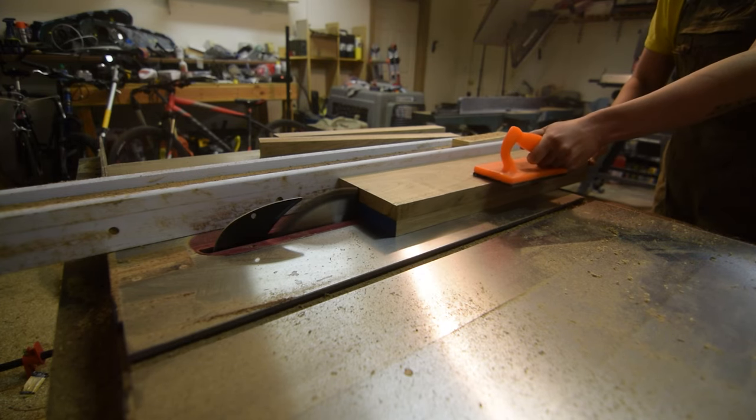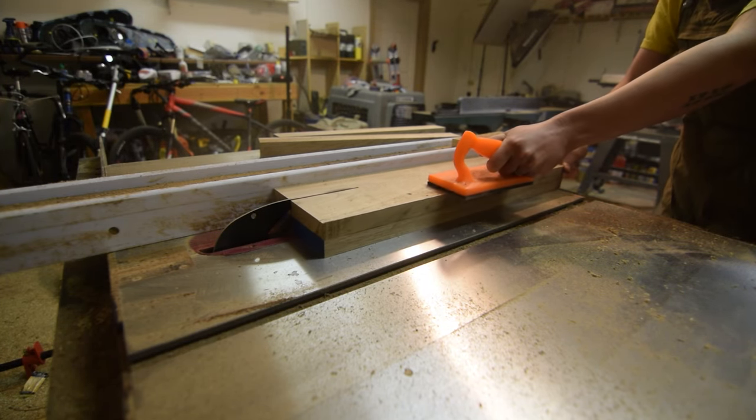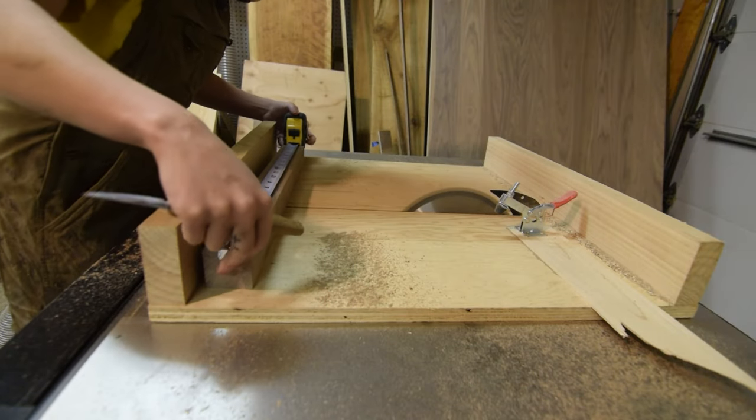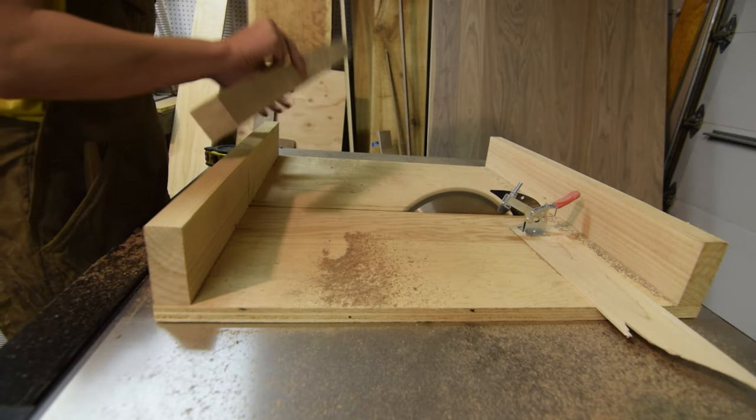After the glue cured, I trimmed the legs to about one and three-quarter inches by one and three-quarter inches, then cut them down to the right height, about 19 and a half inches.